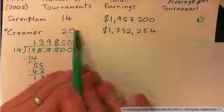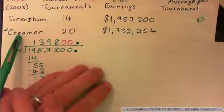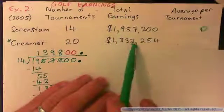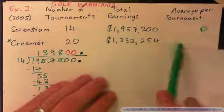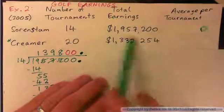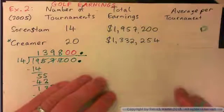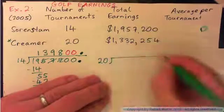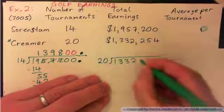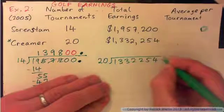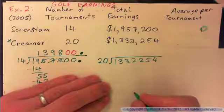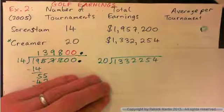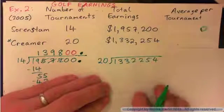So please press pause and do this one. This golfer, Kramer, was in 20 tournaments and earned this total amount — what is her average earnings per tournament? Remember, these are on your homework anyway, so you might as well get them done now. The total is 1,332,254.